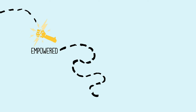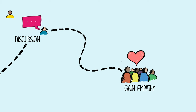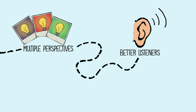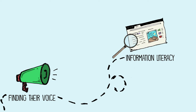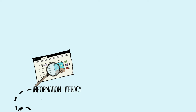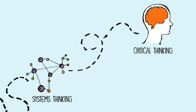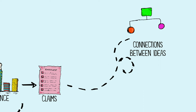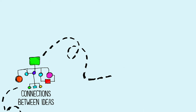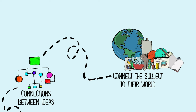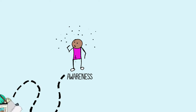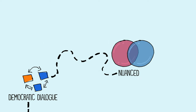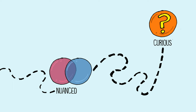Students are empowered to own the discussion process. They gain empathy and learn how to see multiple perspectives. They become better listeners while also finding their voice. They engage in information literacy and often participate in systems thinking. They improve in their critical thinking as they use evidence to support claims. Along the way, they make connections between ideas and connect the subject area to their world.